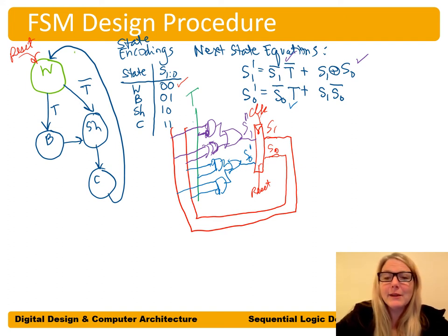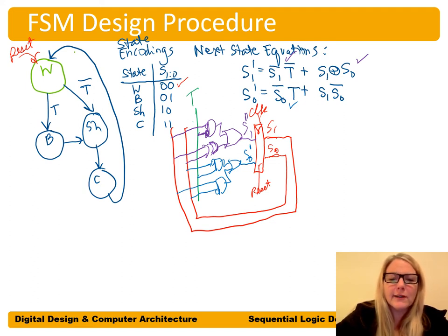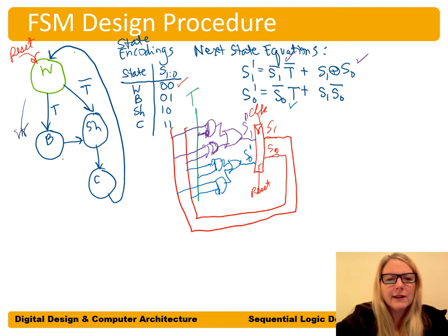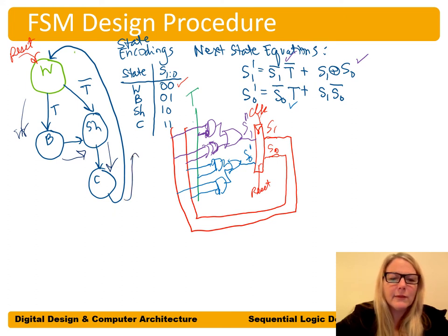We can test that it works by drawing a timing diagram to see what happens at each clock edge. On each clock edge we transition between states: from W to B (if T is true), then to the shower state (SH), then to the class state, and back to the W state.